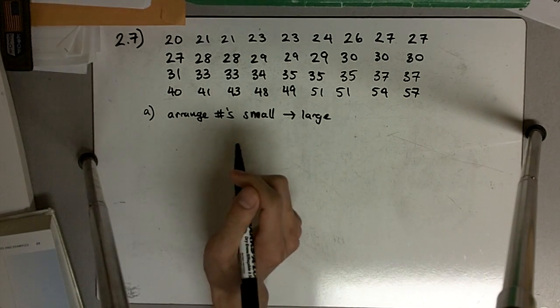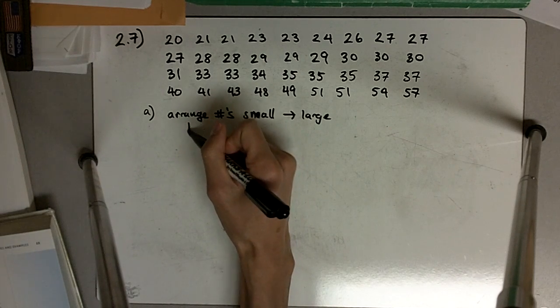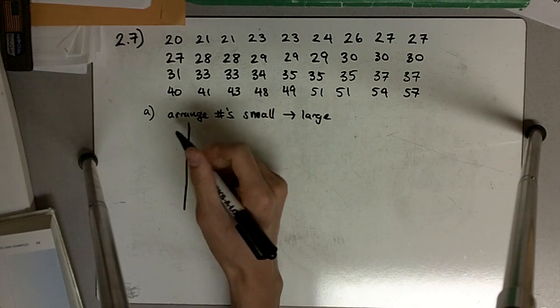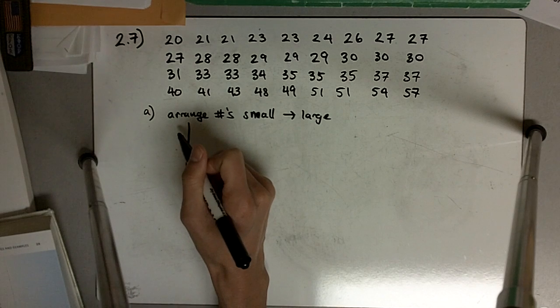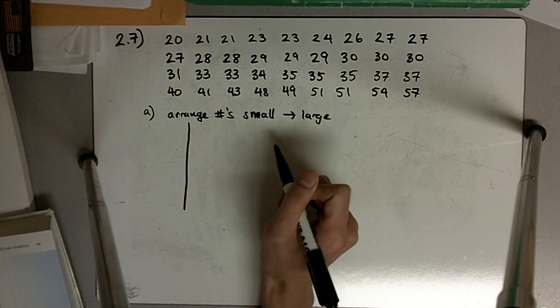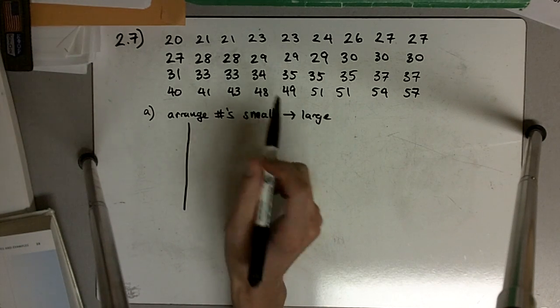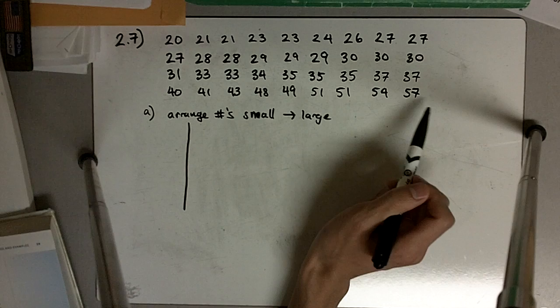Once you have that, to construct a stem and leaf plot, on one hand of the graph we're going to create the tens places, and on the right-hand side we're going to create the leaves, which will be the ones. Because the range only goes from 20 to 57, it makes most sense to break each tens into groups 0 through 4 and then 5 through 9.